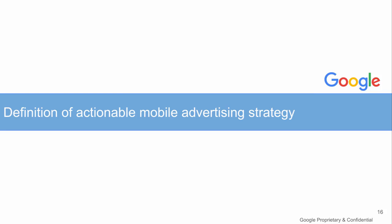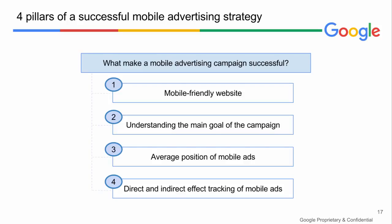After hearing Justas's part about changes in search trends, customer behavior, and Baltic specifics, and having in mind the micro moments narrative, we can describe what steps should be taken to be successful with mobile advertising. Here you can see four main pillars that are essential for success. Let's take a closer look at each of them.